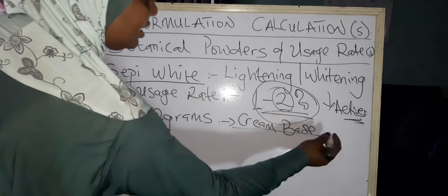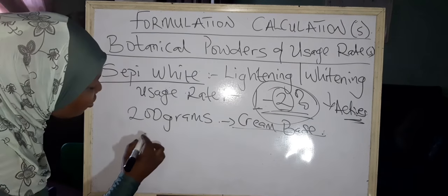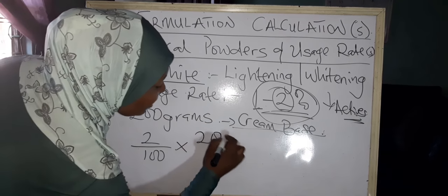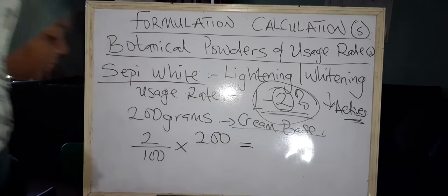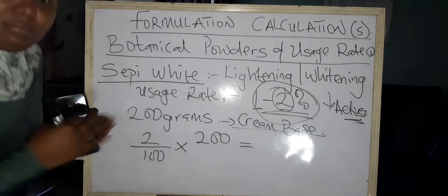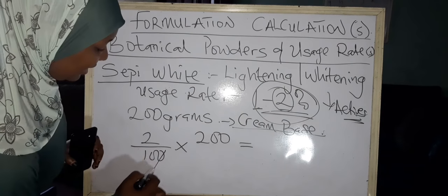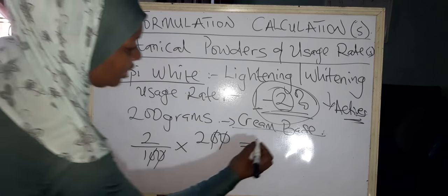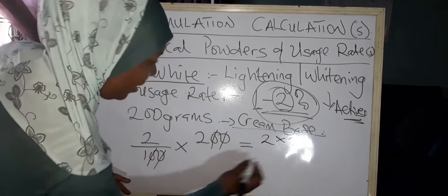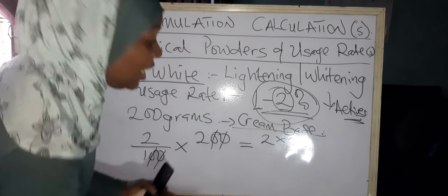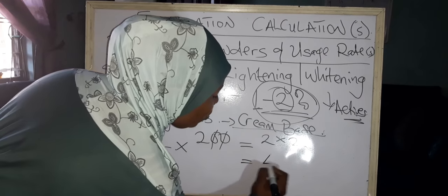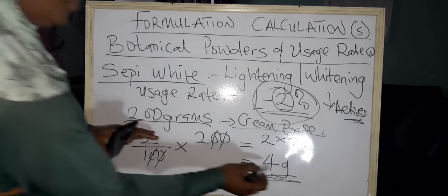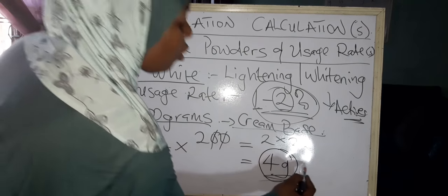It's simple mathematics. Anything percentage we all know is over 100, so it's going to be 2 over 100 times 200. It's simple arithmetic. These zeros cancel these zeros. We're left with 2 times 2 over 1, which is just 2 times 2. Two times two is four grams. So in a base cream of 200 grams, you're going to put four grams of your Sepi White.